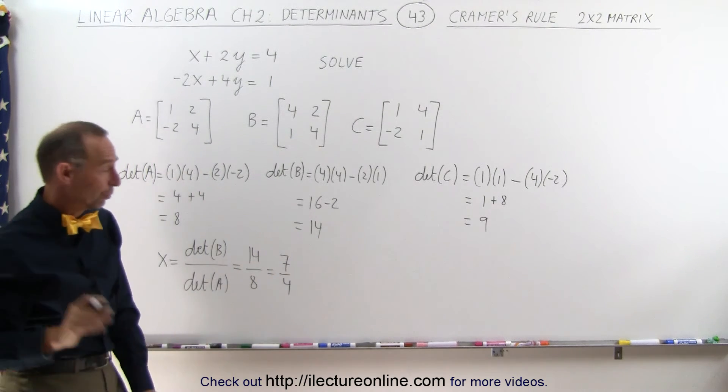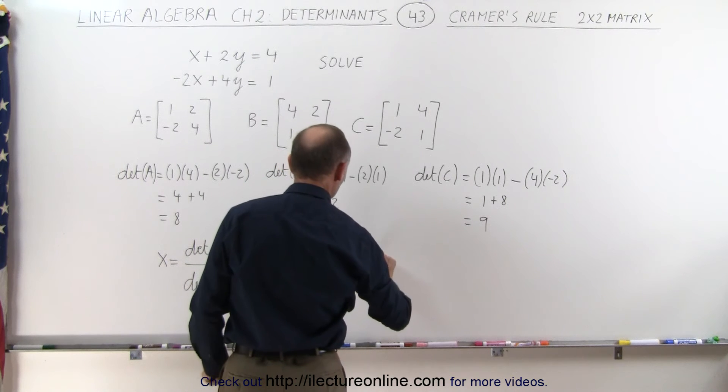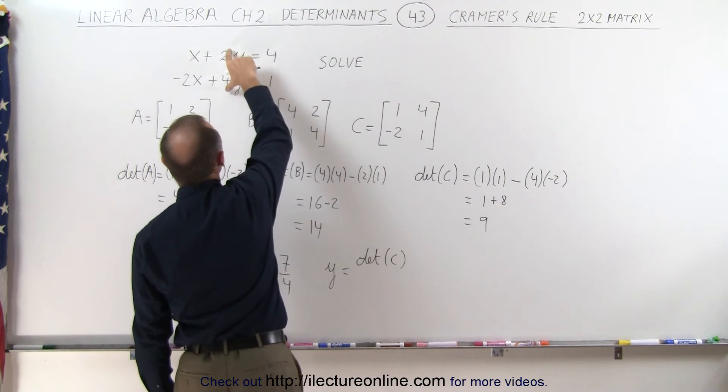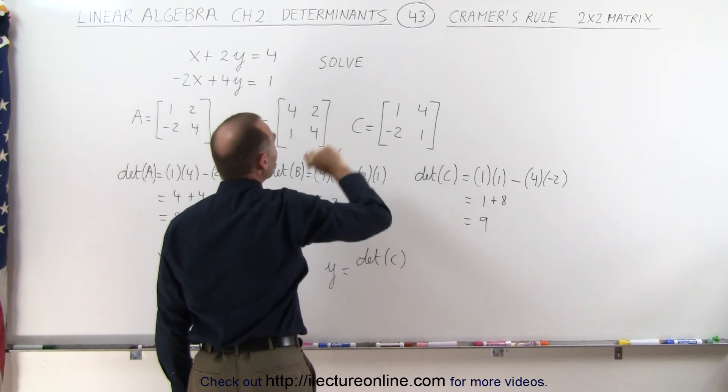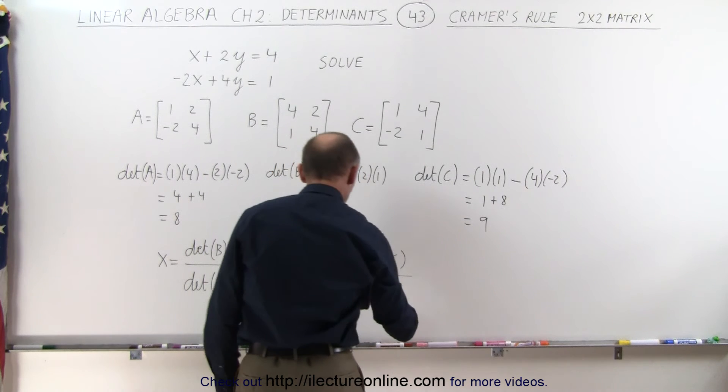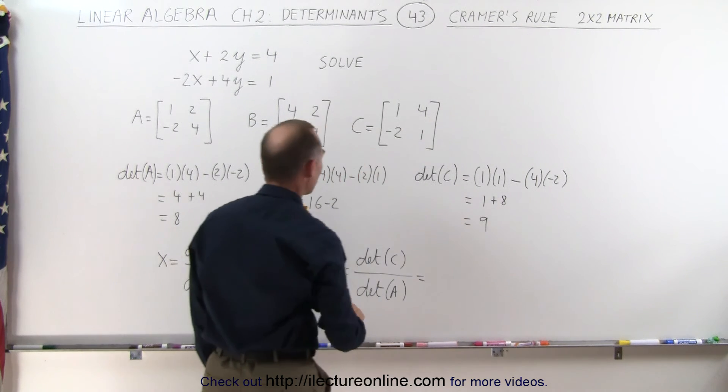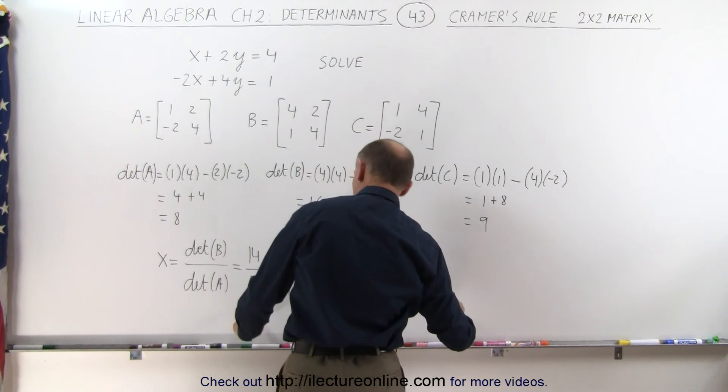We can find the solution for Y by taking the determinant of C, which is where we replace the coefficients of the Y variable by these constants right here, and then we divide that also by the determinant of A. So in this case the determinant of C ended up being 9, and A ended up being 8.